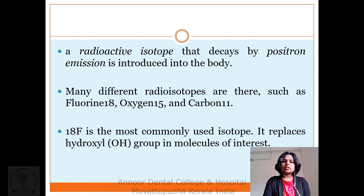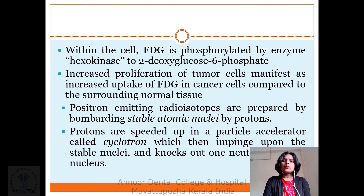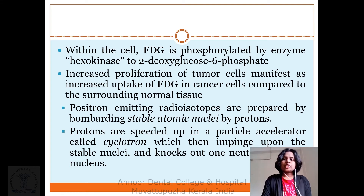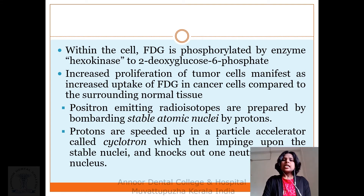Fluorine-18 is the most commonly used isotope. It replaces hydroxyl groups in molecules such as glucose. Within the cell, FDG is phosphorylated by hexokinase to 2-deoxy-glucose-6-phosphate. Increased proliferation of tumor cells manifests as increased uptake of FDG in cancer cells compared to the surrounding normal tissue.